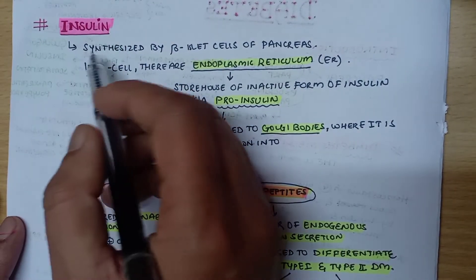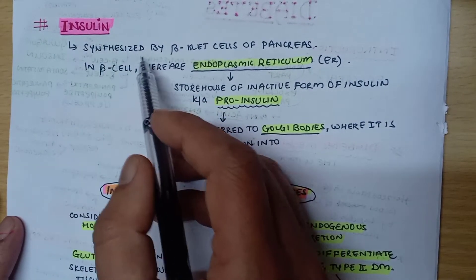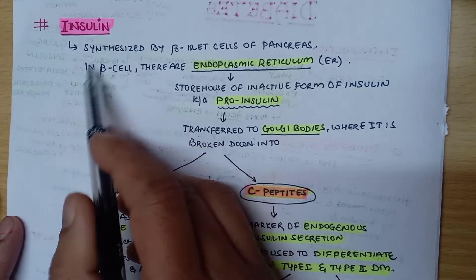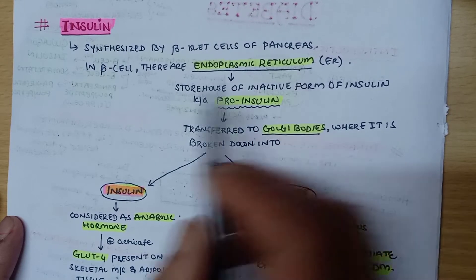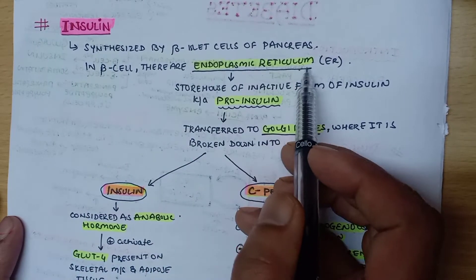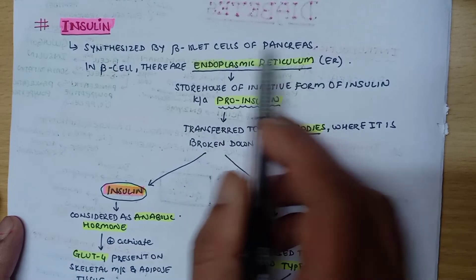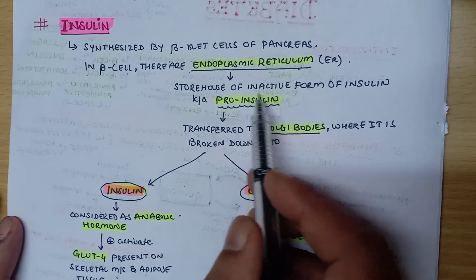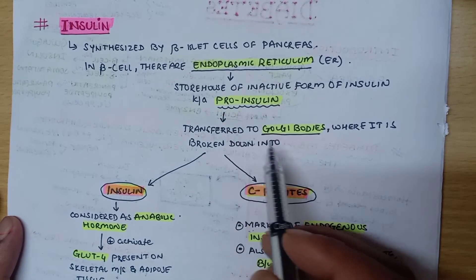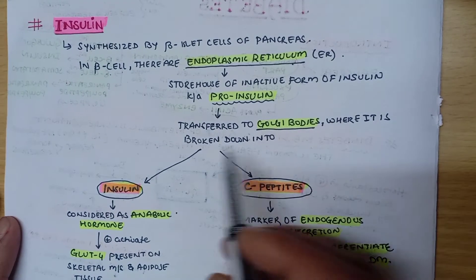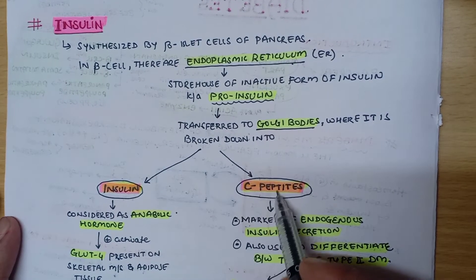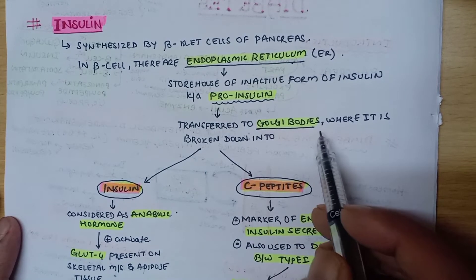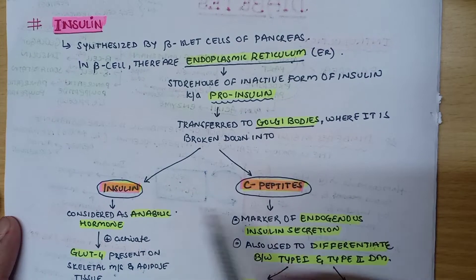Insulin is synthesized by beta islet cells of the pancreas. In beta cells, the endoplasmic reticulum is a storehouse of the inactive form of insulin known as proinsulin. This proinsulin is transferred to Golgi bodies, where it is broken down into insulin and C peptides.